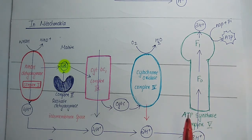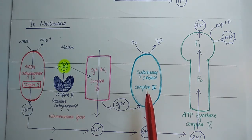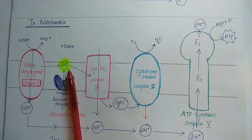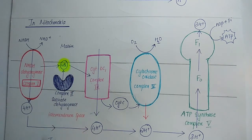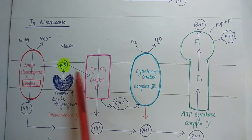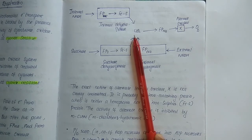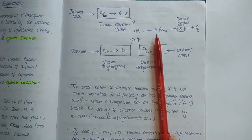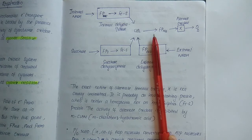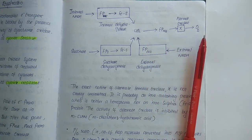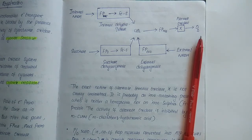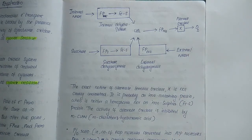In cyanide-resistant respiration, the flow of electrons from reduced coenzymes to ubiquinone is the same as in the normal mitochondrial electron transport chain. But after ubiquinone, instead of passing electrons to cytochrome B, the electrons pass from ubiquinone to a flavoprotein, and from there to an alternate oxidase, finally reaching oxygen. Thus the respiration process and electron transport chain continue even in the presence of cyanide.